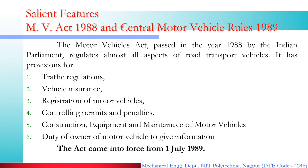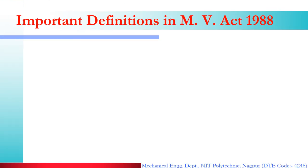This law came into act on 1 July 1989. From 1 July 1989, these motor vehicle rules have been in use throughout India. Motor Vehicle Act 1988's first section gives us some important definitions. When applying any law, it is very important to know how Motor Vehicle and related things are defined — what will be considered what. There are more than 50 definitions in Motor Vehicle Act 1988, but here we will discuss only the important ones.